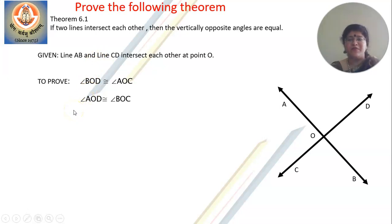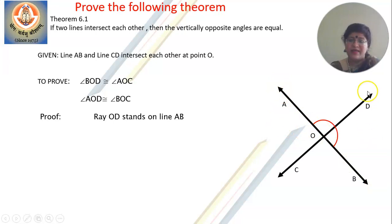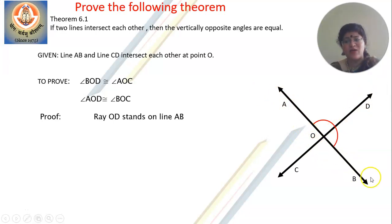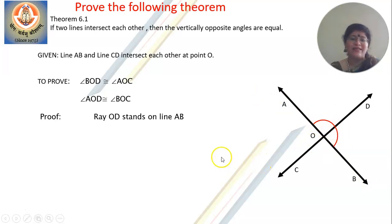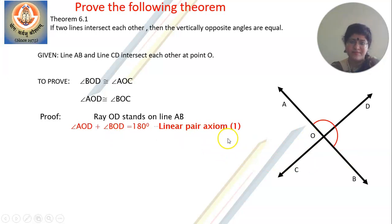Let us begin with the proof. Ray OD stands on line AB. So if this ray OD is standing on line AB, what kind of angles do these two become? They form angles in a linear pair. So angle AOD plus angle BOD equals 180 degrees, because of the linear pair axiom.